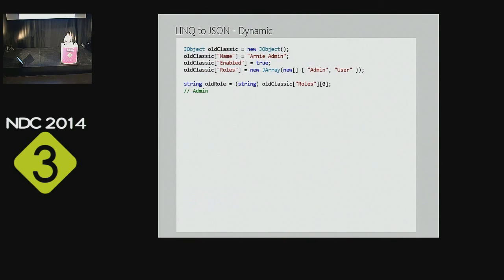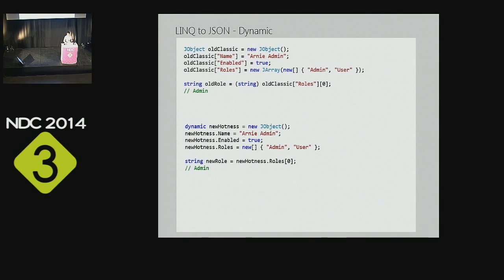Sub-queries are easy since everything in LINQ to JSON implements IEnumerable — you can query nested arrays inline. LINQ to JSON also implements dynamic: assigning a JObject to a dynamic variable means you no longer need quoted dictionary indexers, don't need to wrap array values in a JArray constructor, and don't need explicit casts — the dynamic implementation handles those conversions for you.